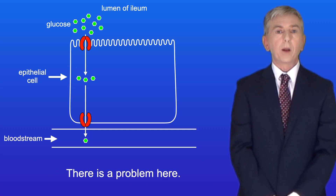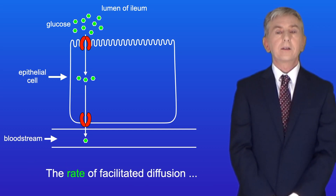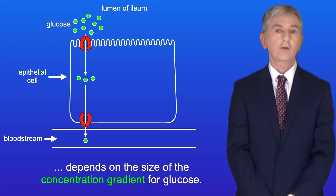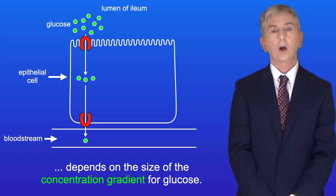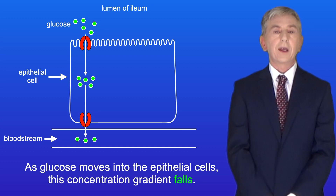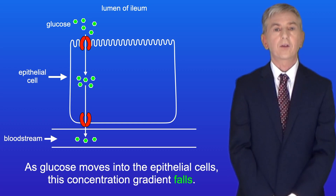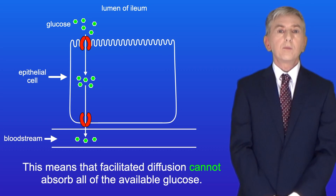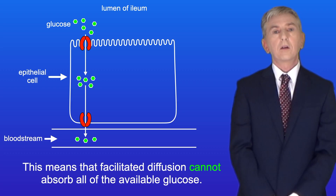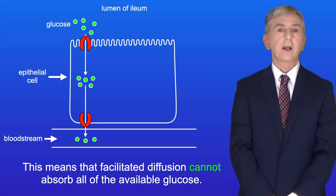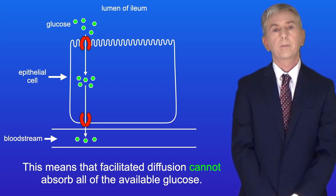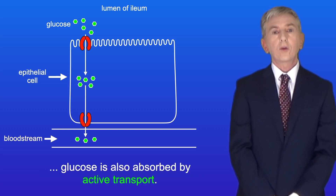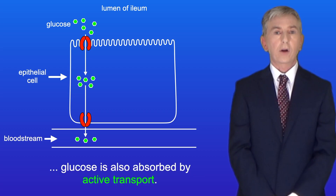Now there is a problem here. The rate of facilitated diffusion depends on the size of the concentration gradient for glucose. As glucose moves into the epithelial cells, this concentration gradient falls. So facilitated diffusion cannot absorb all of the available glucose. Therefore, as well as facilitated diffusion, glucose is also absorbed by active transport.